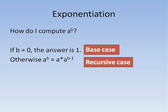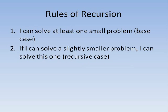When writing code, I think of two rules that correspond to the two parts of a recursive method. First, I can solve at least one small problem — the base cases. I need to have some small problem that I can solve directly. Then, if I can solve a slightly smaller problem, I can solve this one. This is the recursive case — I make a call to the same method, moving closer to the base case.